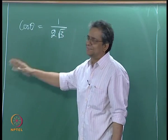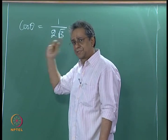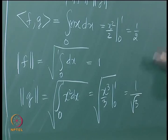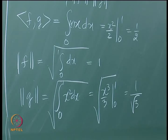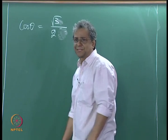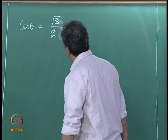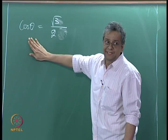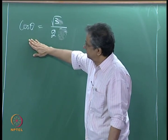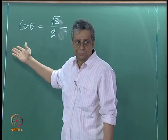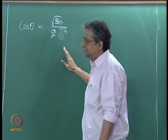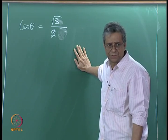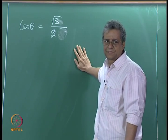So it is just an interesting exercise — you can find theta. We realize that theta is not pi by 2. We have already seen that it is very convenient to have these basis vectors orthogonal to each other. So we will follow the same process we did earlier and try to get two vectors which are perpendicular to each other from the functions 1 and x, which are linearly independent.